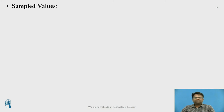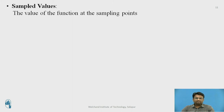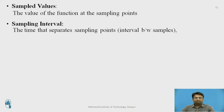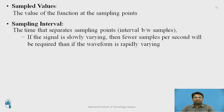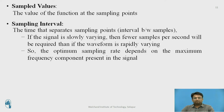The values of the function at the sampling points are the sampled values. The time that separates the sampling points — that is, the interval between two samples — is the sampling interval. If the signal is slowly varying, then fewer samples per second will be needed than if the signal is varying rapidly. The optimum sampling rate depends on the maximum frequency components present in the signal.